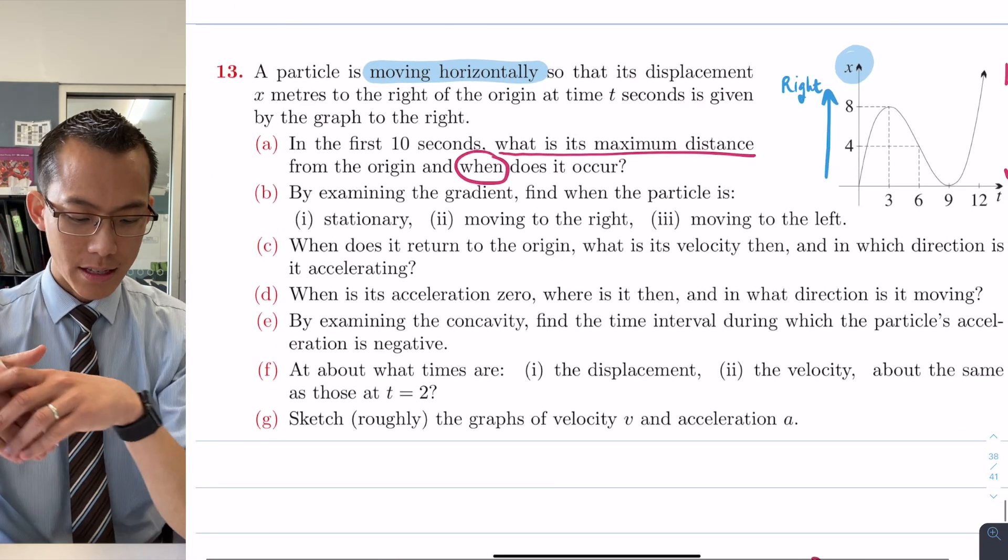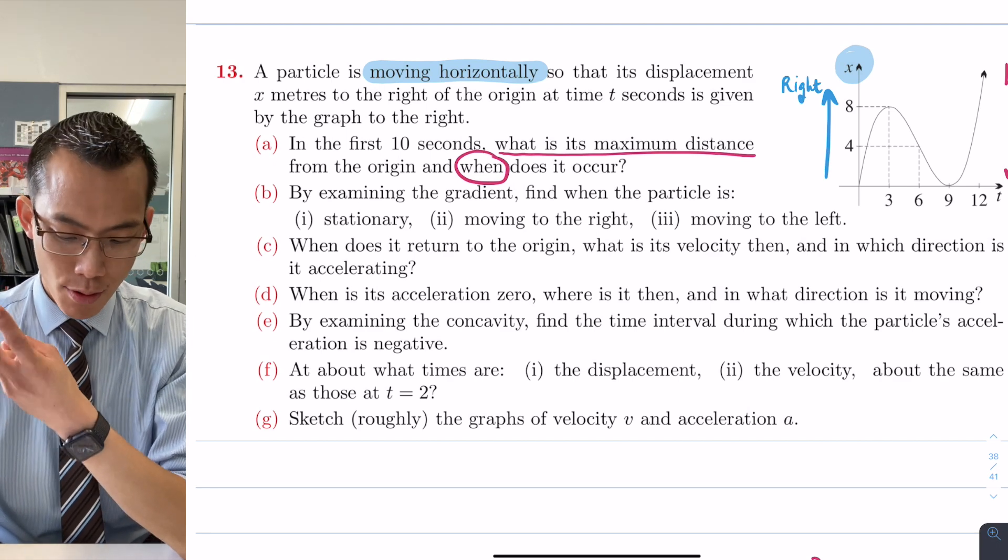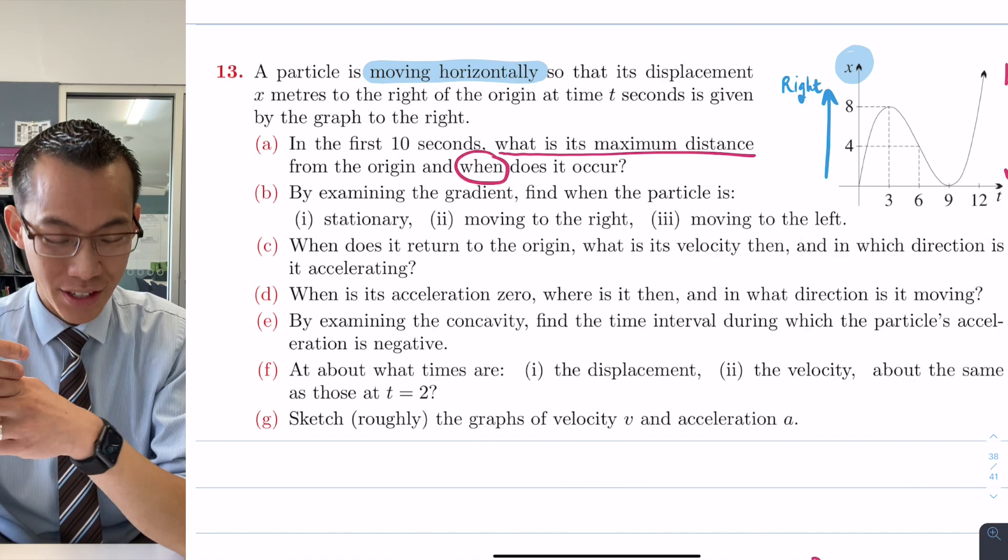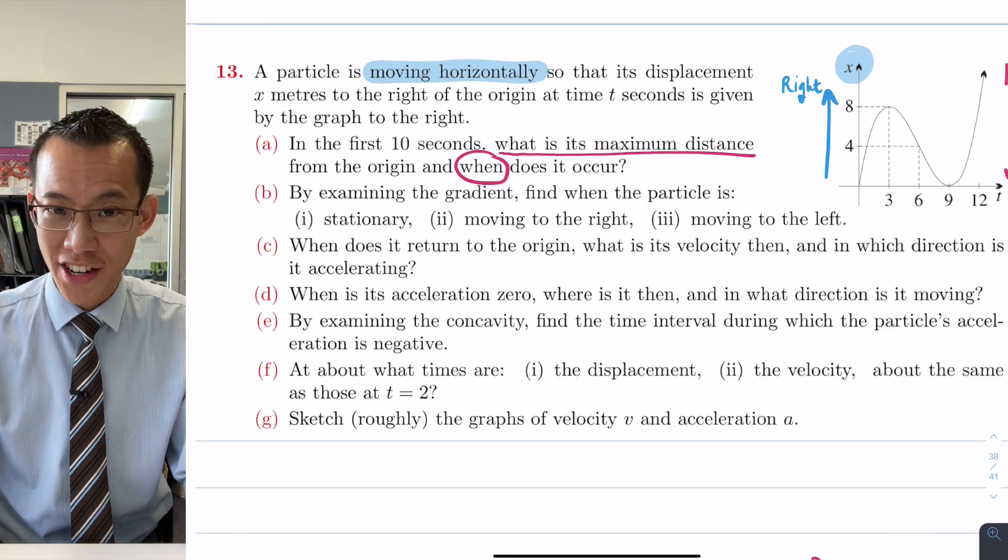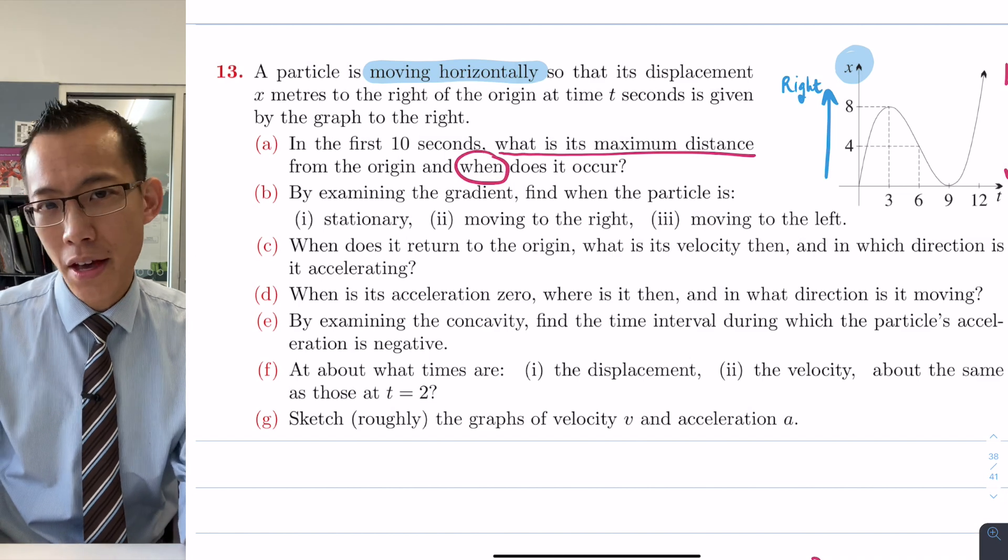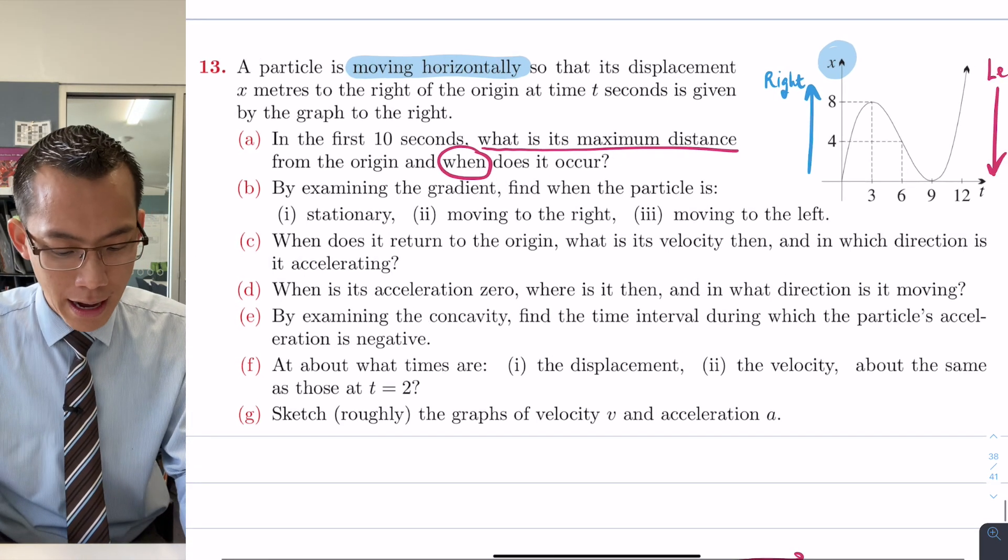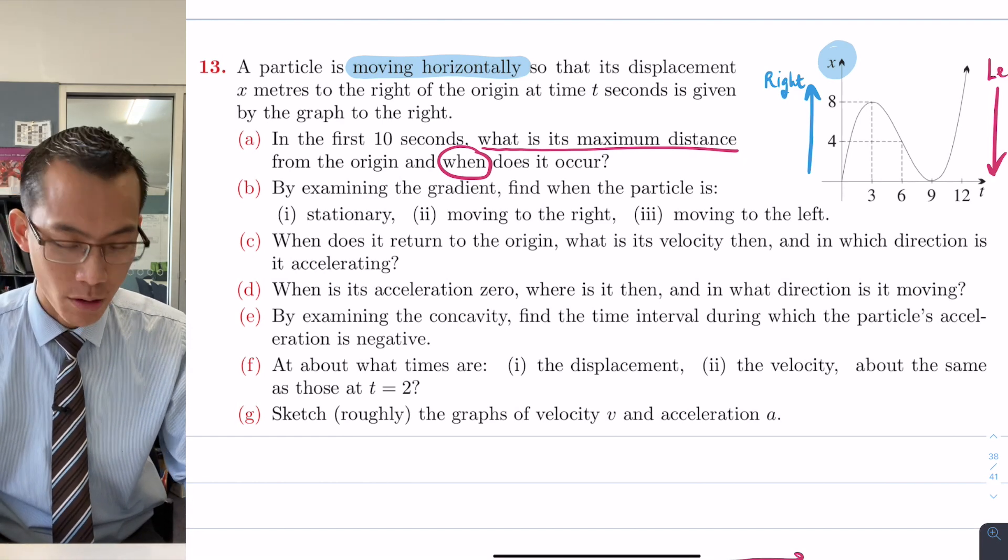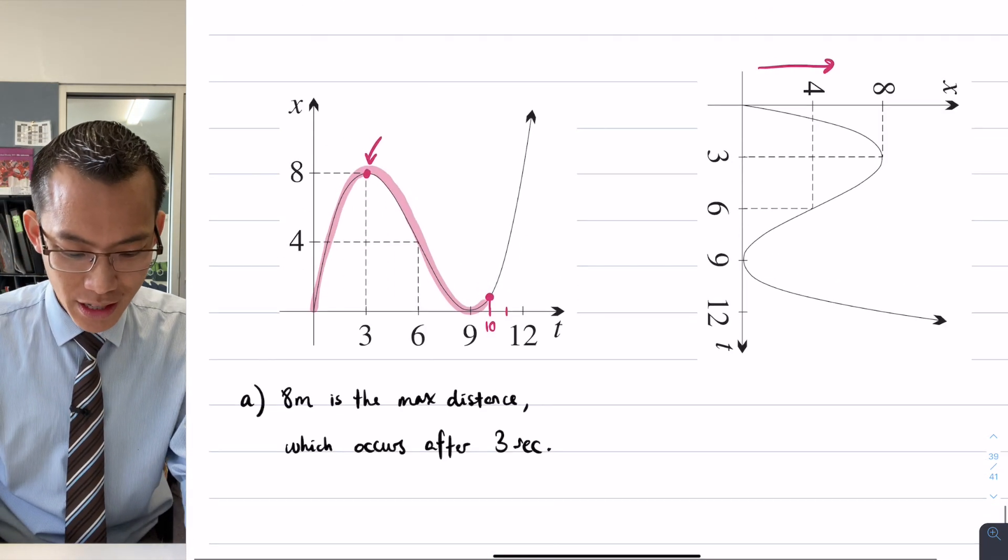Let's come back to the questions. It says, by examining the gradient, find when the particle is stationary, moving to the right, moving to the left. So let's do the easy part first, which is stationary. Now we call stationary points stationary points because of this idea that they sort of represent like when the particle stops moving. So essentially I'm just looking for stationary points. I also noticed that part B has stopped the restriction in part A about the first 10 seconds, so I won't worry about that anymore. I'm now just looking at the entire graph, okay? So when is the particle stationary?